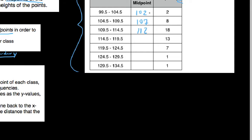What I want you to see is that these midpoints are going up by five each time, and that's the same as the class width of each class. So we can just keep adding five to get each subsequent class midpoint — whatever the class width is, add that on to get the next midpoint. And always check that your class midpoints are actually in between the lower and upper boundaries — like 117, which is perfectly between 114.5 and 119.5.